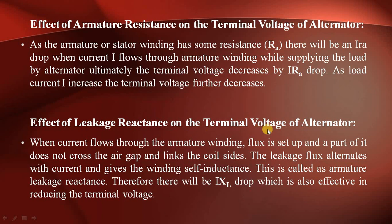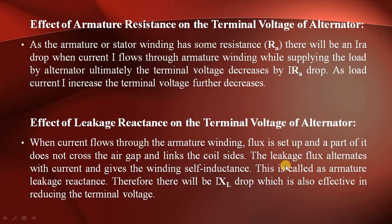Now we will see the effect of leakage reactance on the terminal voltage. When current flows through the armature winding, flux is set up. Part of this flux does not cross the air gap — it links only the coil sides. This leakage flux alternates with the current and gives the winding a self-inductance, called the Armature Leakage Reactance.